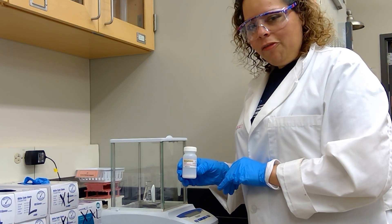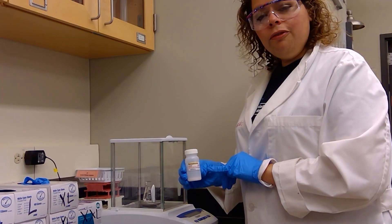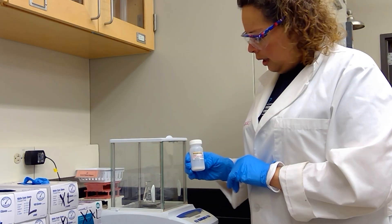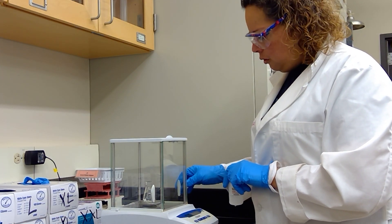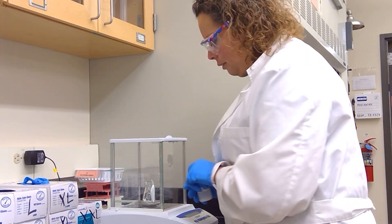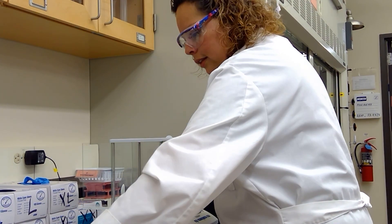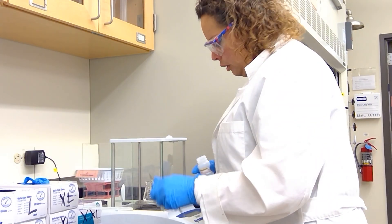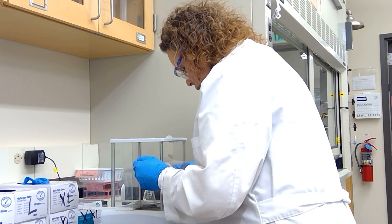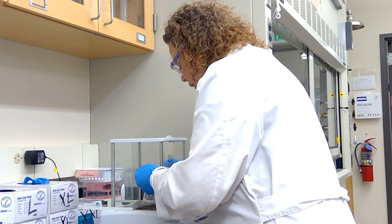We are starting off by weighing out 250 milligrams of benzophenone, and I'm going to measure that directly into my 25 milliliter Erlenmeyer flask. 250 milligrams is 0.25 grams. I'm going to try to get as close as I can to that amount.